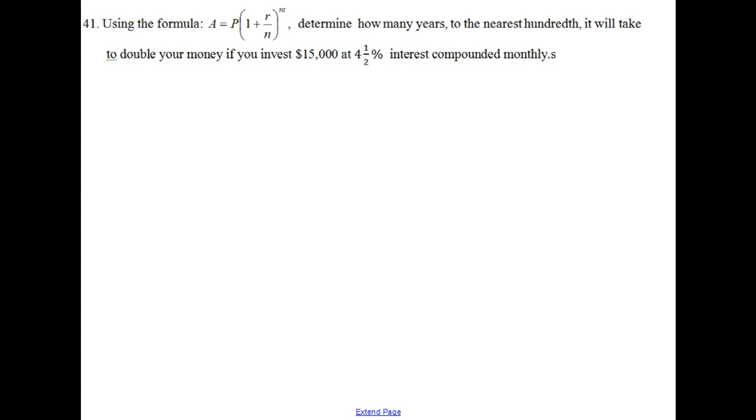Problem 41. Using the formula A equals P, parentheses 1 plus r over n, parentheses to the power nt. Determine how many years to the nearest hundredth it will take to double your money if you invest $15,000 at 4.5% interest compounded monthly.